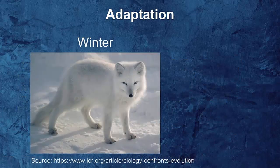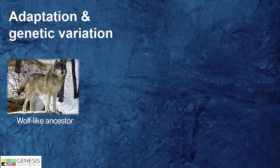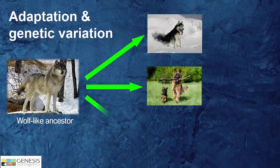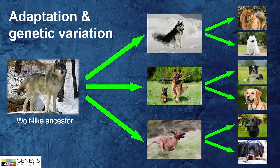For example, in the winter, the coat of the Arctic fox turns white, and in the summer it turns gray. This helps them hunt and stay safe from predators. Depending on where these dogs live, certain features get turned on and off, and then over time, when they reproduce, you end up with a wide variety of different types of dogs.